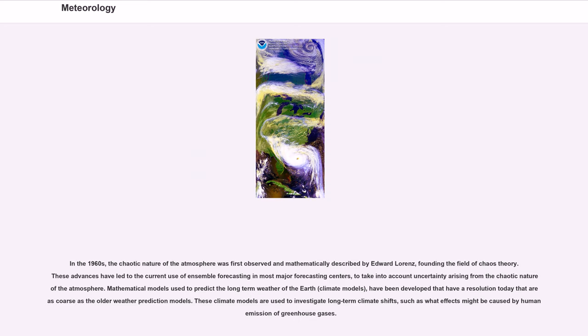Mathematical models used to predict the long-term weather of the Earth, climate models, have been developed that have a resolution today that is as coarse as the older weather prediction models. These climate models are used to investigate long-term climate shifts, such as what effects might be caused by human emission of greenhouse gases.